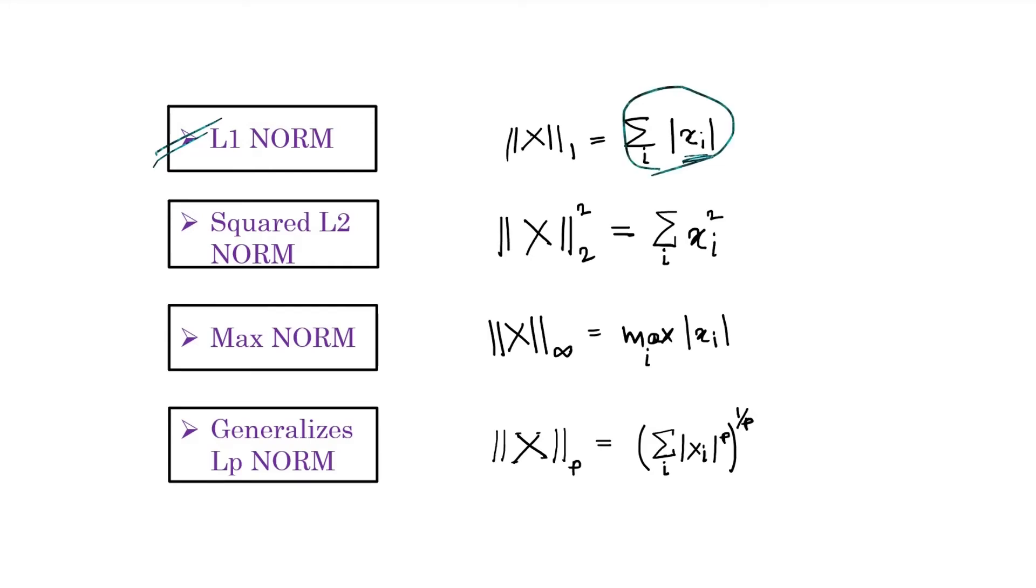Then squared L2 norm is also very simple to understand. You simply calculate the way L2 norms are calculated, but the only difference is that on the right side you will not have the square root. Instead, we move that square root to the left-hand side, which becomes this square notation.